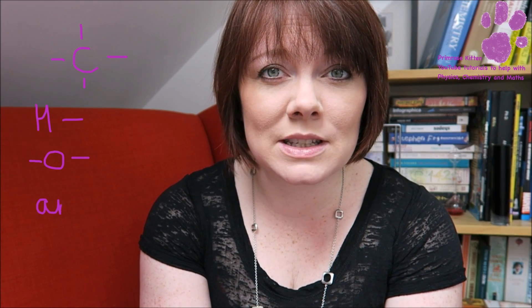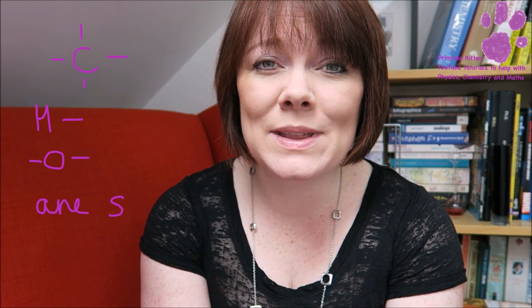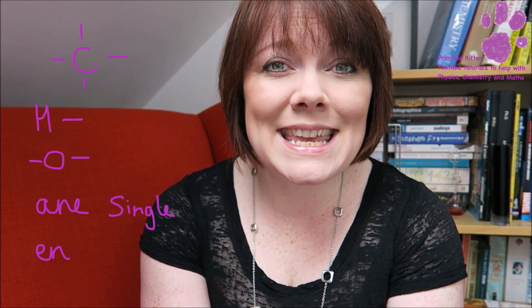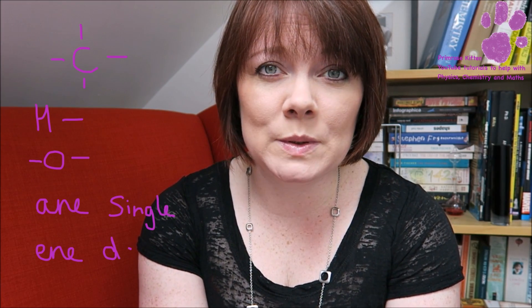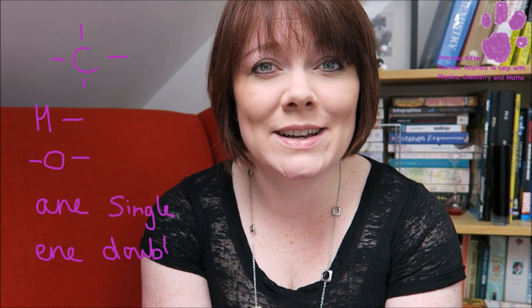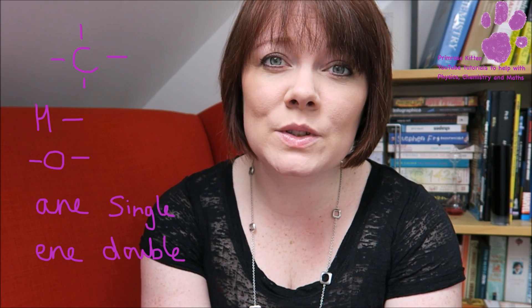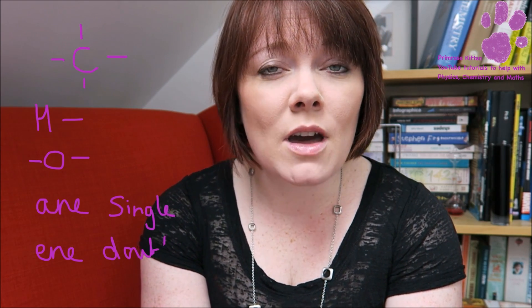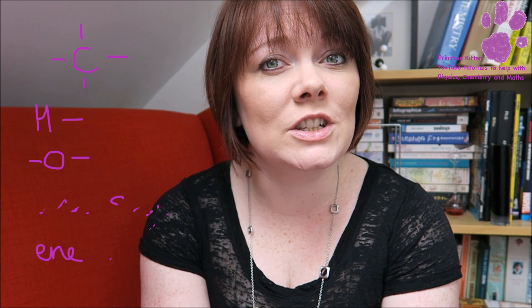First of all, organic chemistry. You have to remember that carbon makes four bonds, hydrogen makes one bond, and oxygen makes two bonds. The end of the name will tell you what type of bonding there is — an alkane with A-N-E is going to be single bonding, and an alkene with E-N-E is going to be double bonding. The most common mistake here is giving the wrong number of bonds to the wrong element: carbon four, hydrogen one, oxygen two.